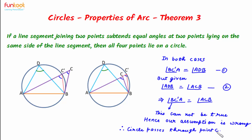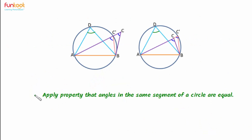Therefore the circle passes through point C, and if it passes through point C, then we can say that the circle passes through points A, D, C, and B. This is what we have to prove in the theorem. For proving this theorem, we applied the property that in a circle, angles in the same segment are equal.